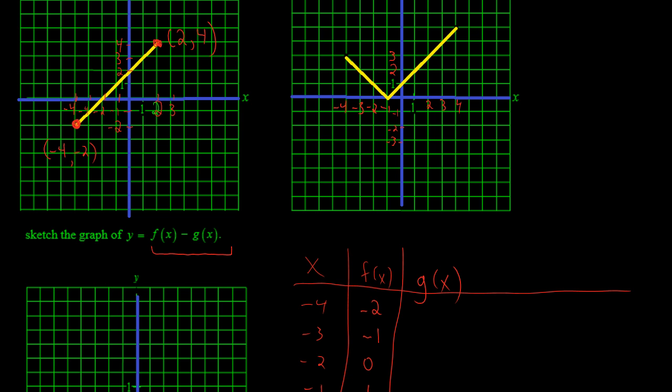So just some important points here are (negative 4, 3). You can see (0, negative 1) right there.